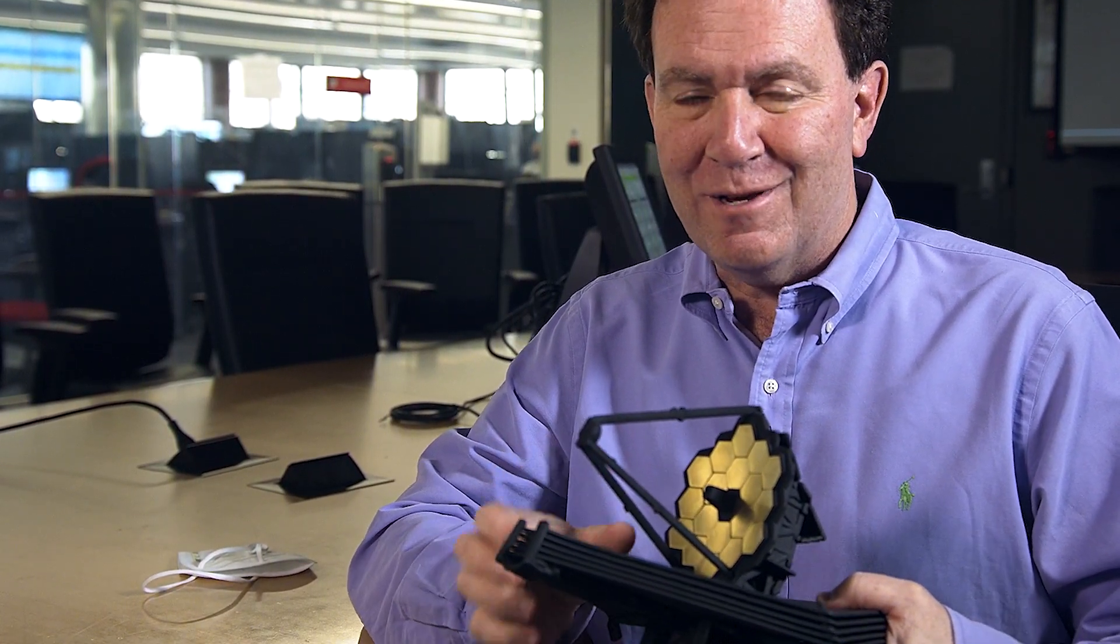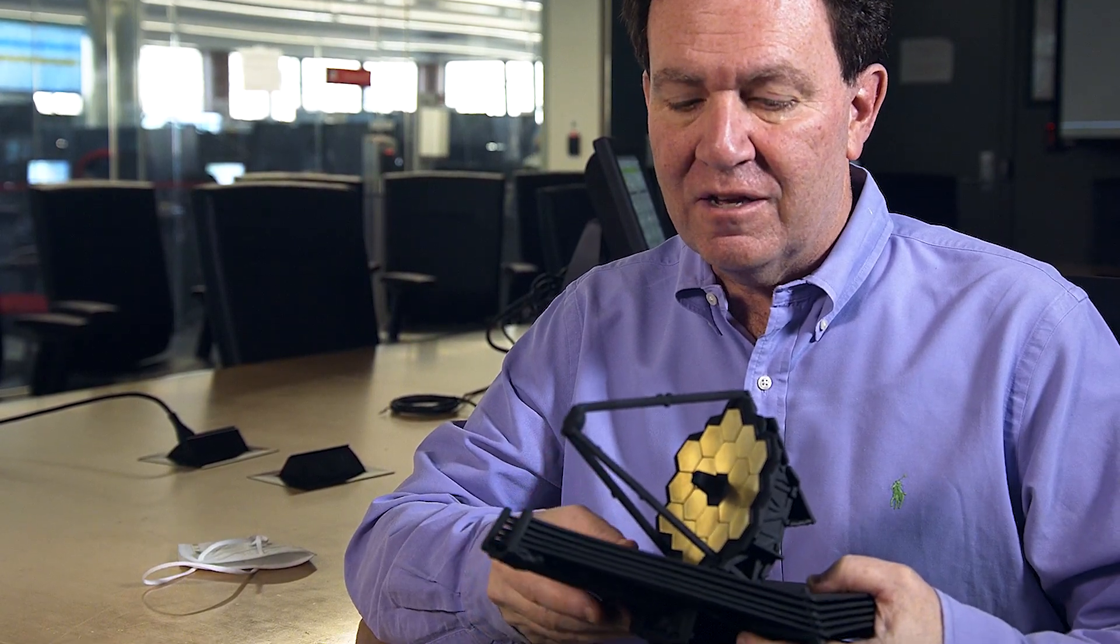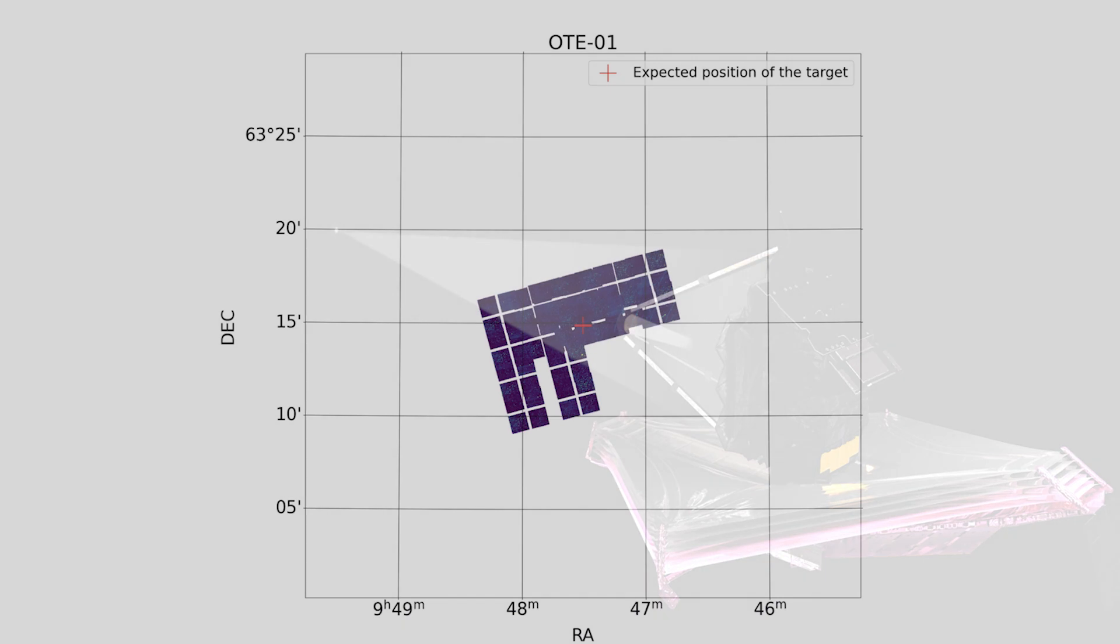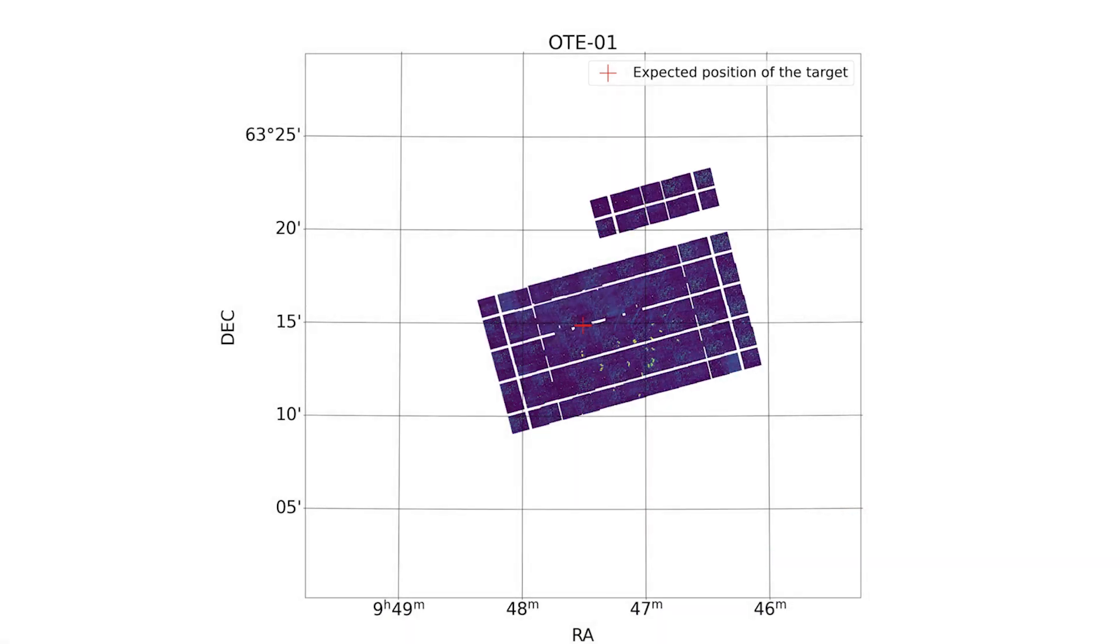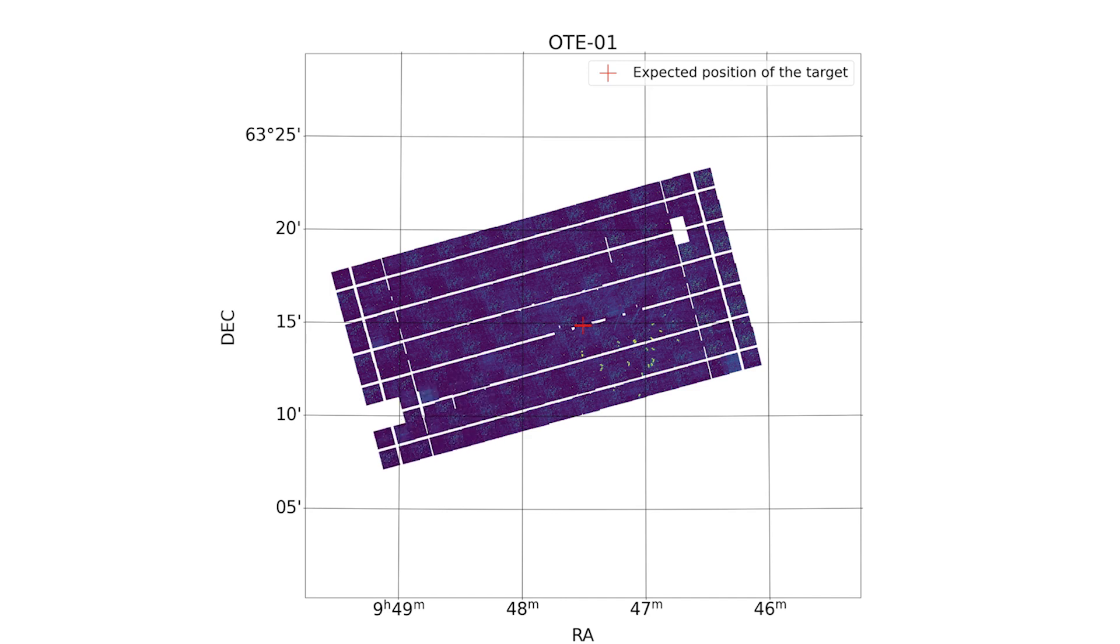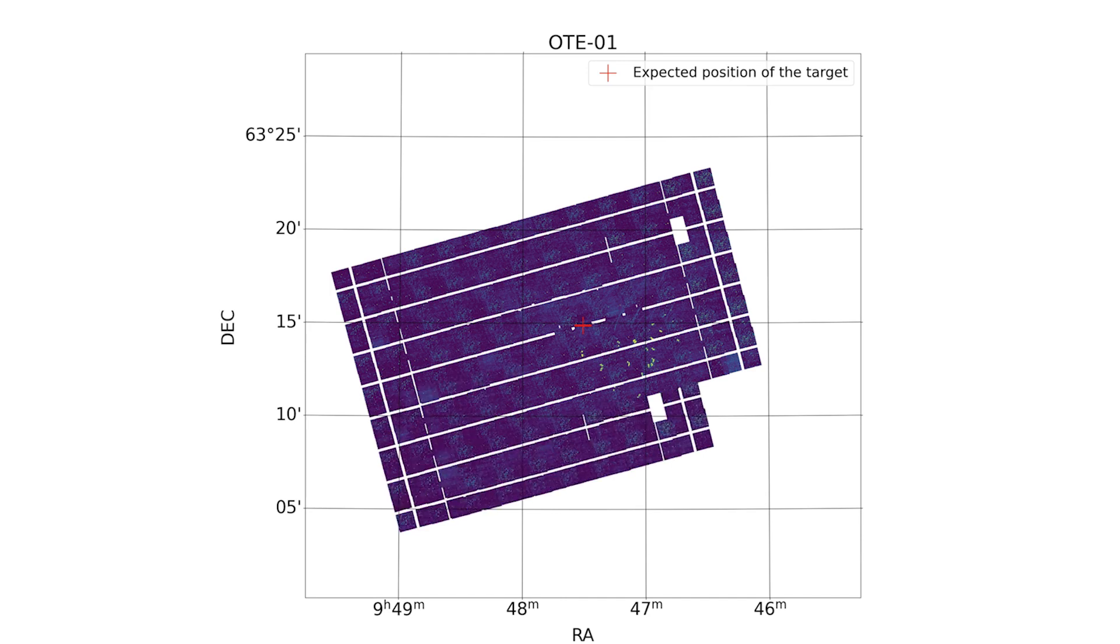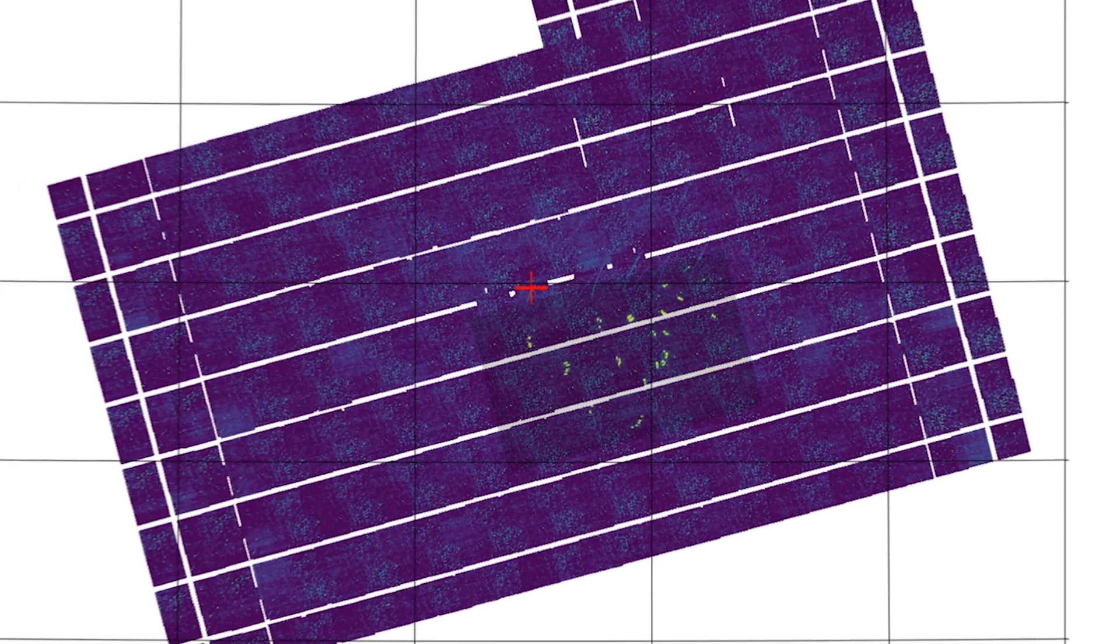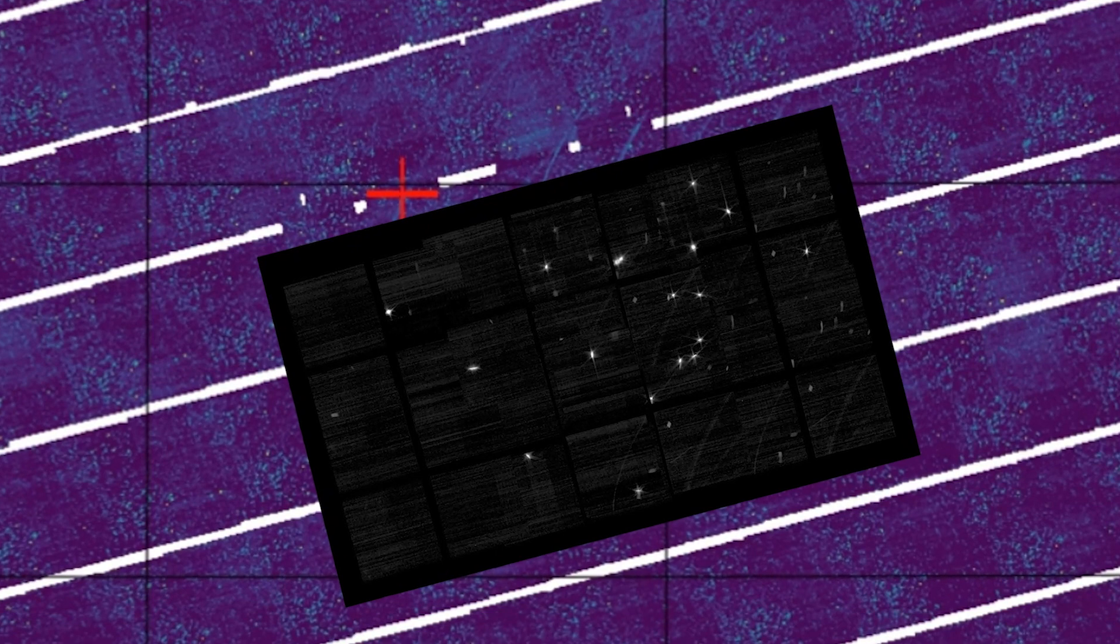We pointed at a bright star and made a mosaic. We took the near-infrared camera and took images in different parts of the sky, and then we looked for the 18 spots from the 18 different telescopes. We were very excited to find them, and the 18 spots were actually fairly close to each other, so really everything was very close to what was predicted.